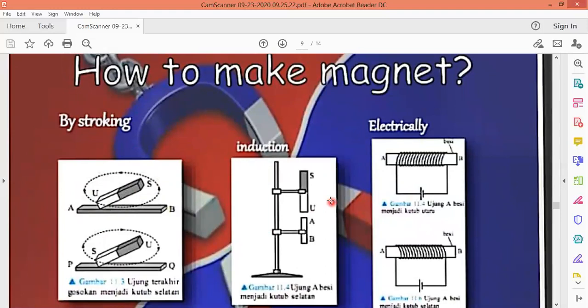You know that induction means the magnetic field is induced here. When we pass the current, when we pass the magnet, this is the proper process of induction. Then the next one is electrically. In induction, basically we are using magnetic field, magnetic materials. Magnetically we can magnetize things.